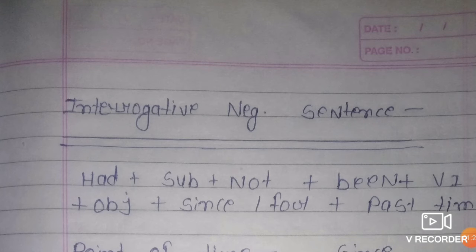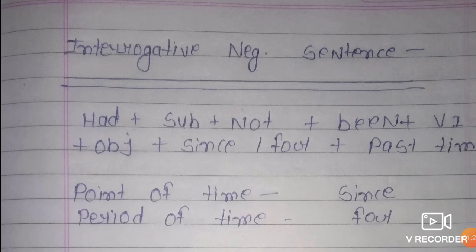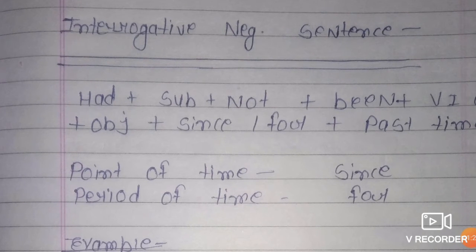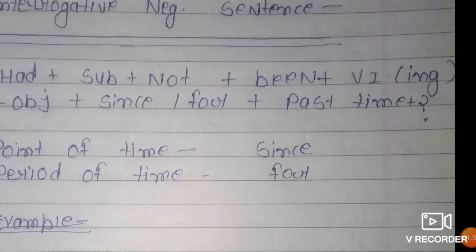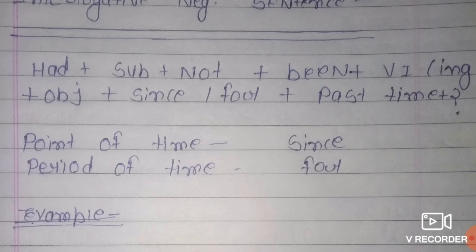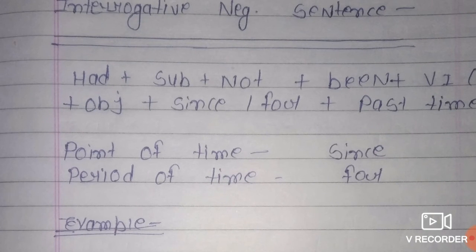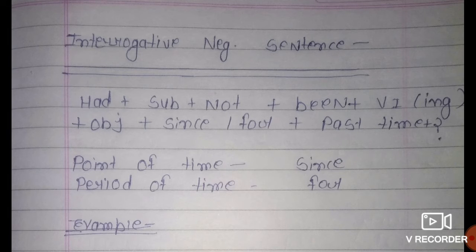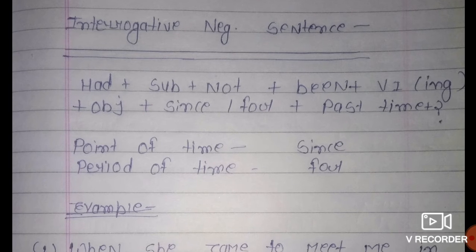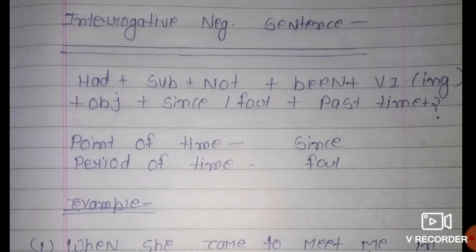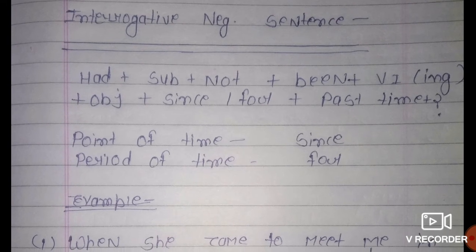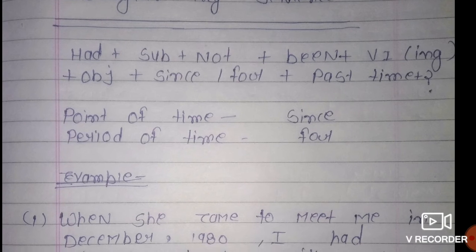Now interrogative negative sentence: Had + subject + not + been + verb ki first form ke saath ing + object + since/for + past time + question mark. Yahan pe not ka use hoga kyunki yeh interrogative negative sentence hai.